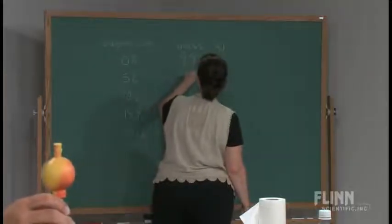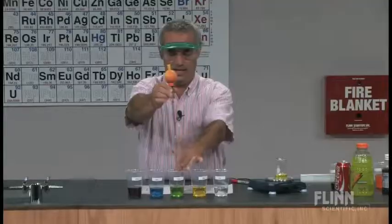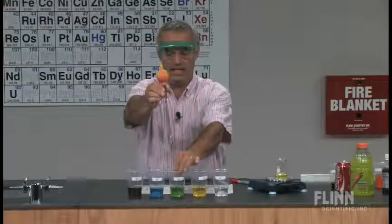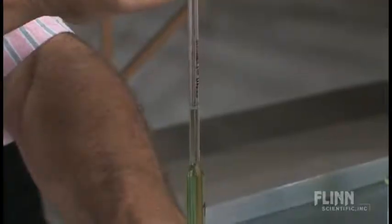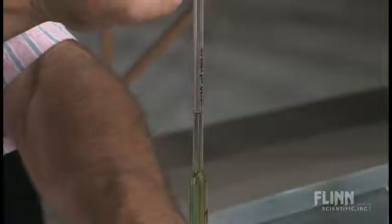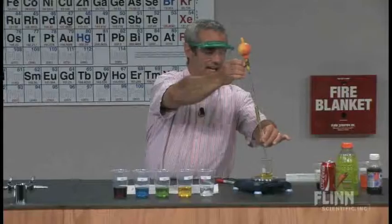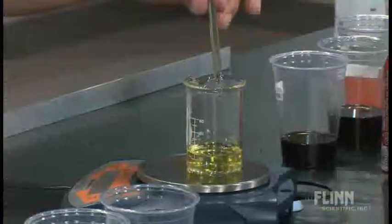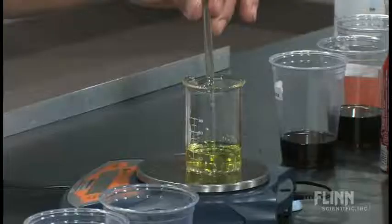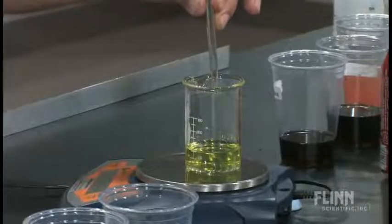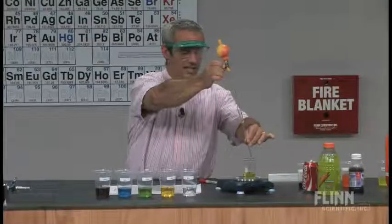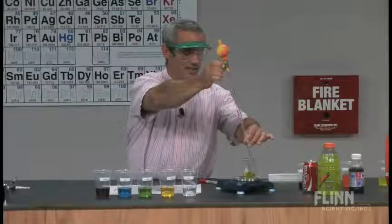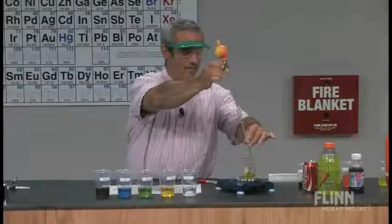We're going to zero this and continue. What we're doing here is generating a standardized curve. I wish I had a camera on this scale to keep me honest, but these are the actual readings coming off this scale — I'm not making these up. We're going to plot that data, draw a best-fit line, and then use that to determine the sugar content of these various beverages.